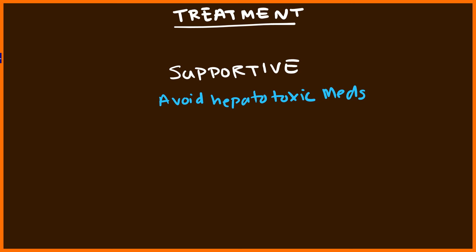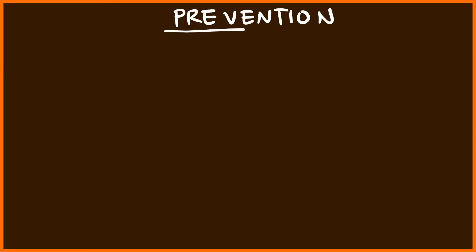If you encounter one of the few that develop fulminant hepatic failure, you need to arrange a liver transplant as quickly as you can. This will typically mean transferring them to another hospital with the capability, but it should be done quickly because it takes time to find donors. These patients can deteriorate very suddenly when they become fulminant, so time is of the essence. As you can see, there's not much in the way of treatment for Hepatitis A virus, so our primary focus is prevention.